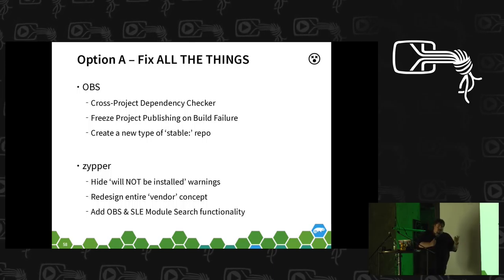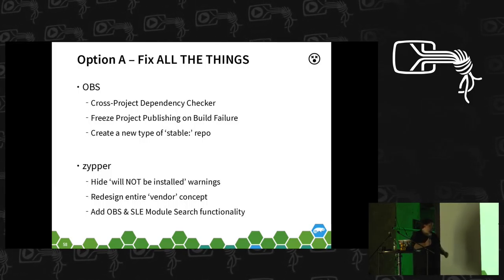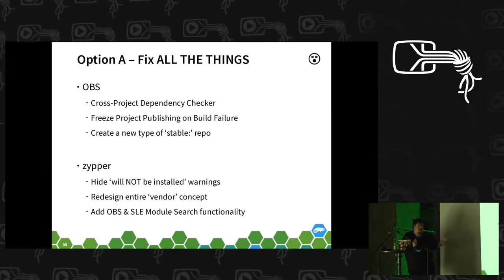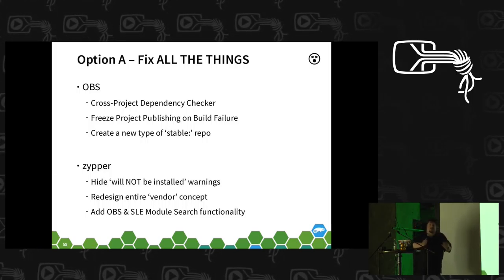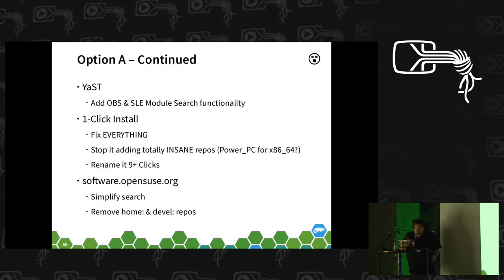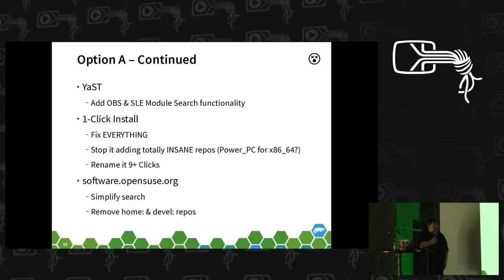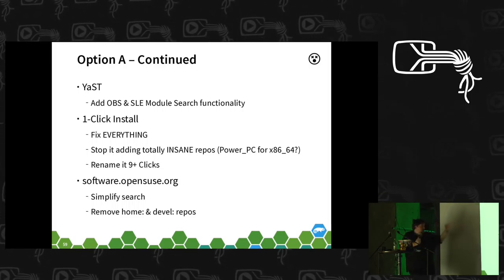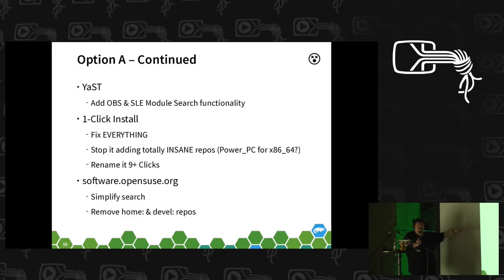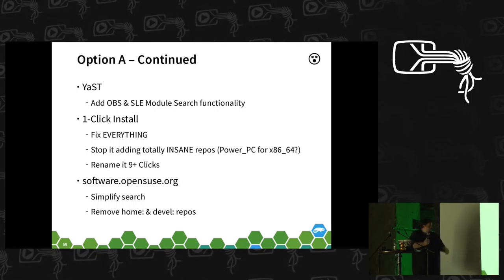And of course improving search functionality, both from software.opensuse.org and the OBS web search, but actually baking that search ability into our tools — into YaST, into Zypper. Maybe there should be a 'zypper cnf' — command not found — so Zypper can tell you it's in this repository over there in the build service. There's already talk about doing that for SLEE modules. Adding that to YaST too. In the one-click install, we need to fix everything there — stop adding insane repositories. It shouldn't be adding PowerPC repos for Intel. And it isn't a one-click install — when it works best, it's still nine-plus clicks.